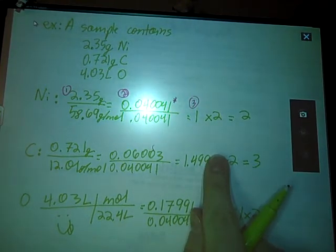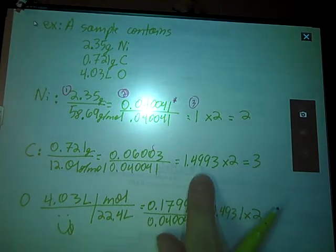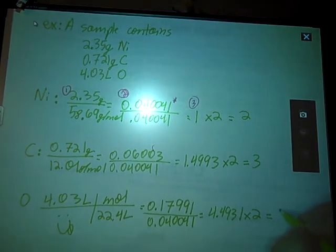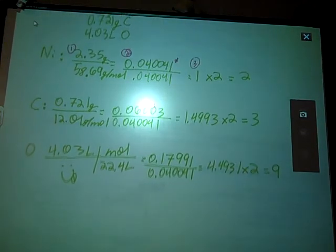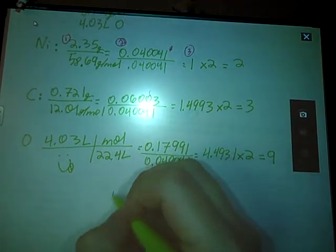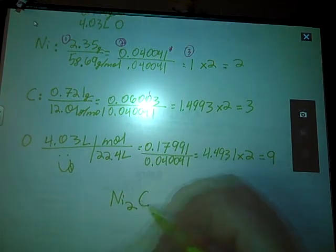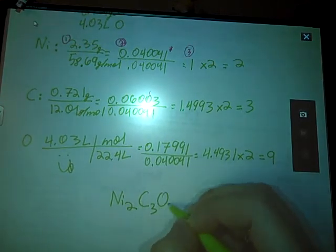Okay, so 2 times 1 is 2. This is 1.5 times 2, which is roughly 3. 4.5 times 2 is right about 9. So these are my subscripts. So this one's going to look a little bit different. I have Ni2C3O9.